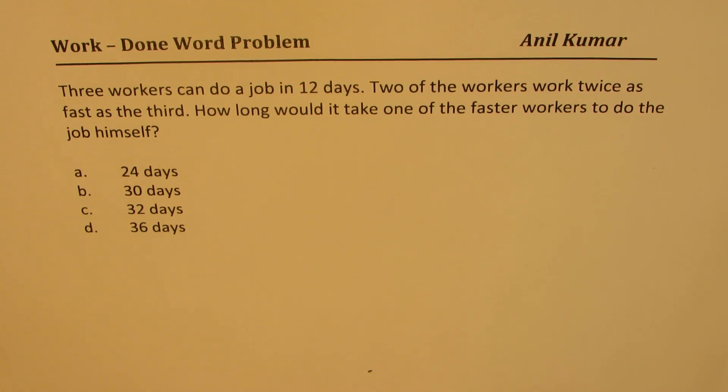The question here is: three workers can do a job in 12 days. Two of the workers work twice as fast as the third. How long would it take one of the faster workers to do the job himself? Now how to solve such a question?